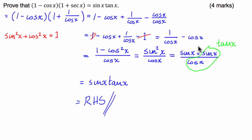I then separated my sine squared of x into sine x times sine x. That's just for again for my own benefit. I was able to identify that sine x over cosine x is equal to the tangent of x. Once I'd done that then I was able to find the right hand side which is sine x tan x. And then we've proved that one minus the cosine of x times one plus the secant of x is equal to sine x tan x.